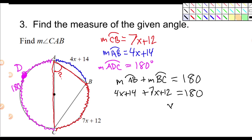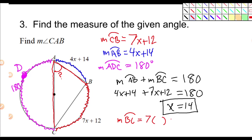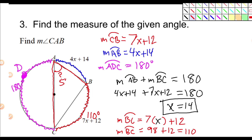G-Algebra says X is equal to 14. Now I can find the measure of arc BC first. The measure of arc BC is equal to 7 times 14 plus 12. That's 70 plus 28, which is 98, plus 12 more, which equals 110. So the arc is 110 degrees. Now what's the relationship to the angle? It should be half of that. So half of 110 is 55 degrees. And we're done with this problem.